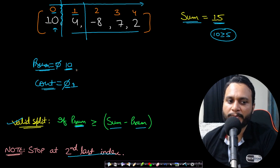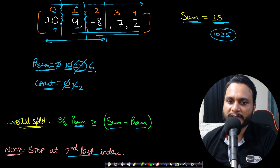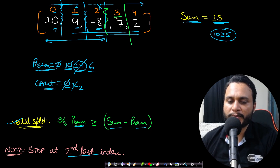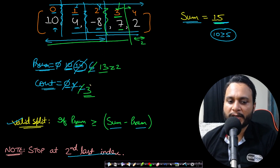At index 1, add 4 to prefix sum giving 14. Right-hand side = 15 minus 14 = 1. Since 14 >= 1, this is valid; increment count to 2. At index 2, add minus 1 giving prefix sum = 6. Right-hand side = 15 minus 6 = 9. Since 6 is not >= 9, this is not a valid split. At index 3, add 7 giving prefix sum = 13. Right-hand side = 15 minus 13 = 2. Since 13 >= 2, this is valid; increment count to 3. We stop at the second last index and return the count.